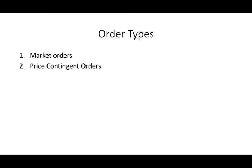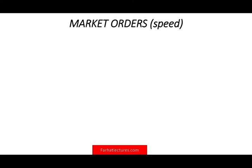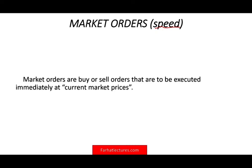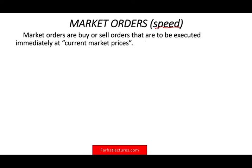Moving from market types to order types: when you buy and sell stocks, you have two types of orders — market orders and price contingent orders. With a market order, you care about speed; you want to buy or sell as soon as possible. Market orders are executed immediately at the current price, though you actually only know the latest price — the next execution price may differ.